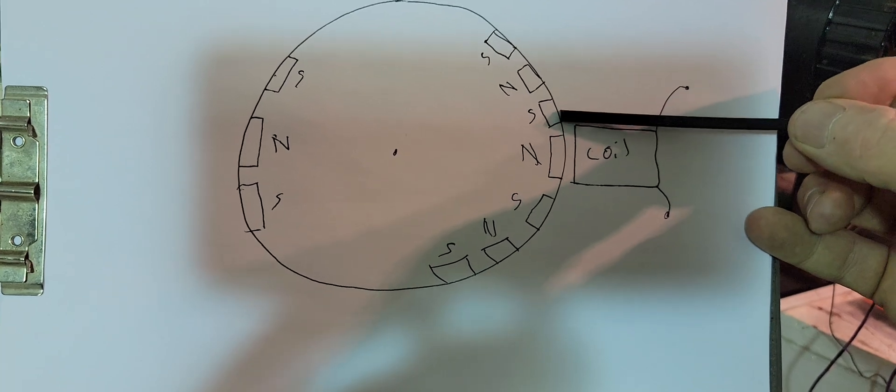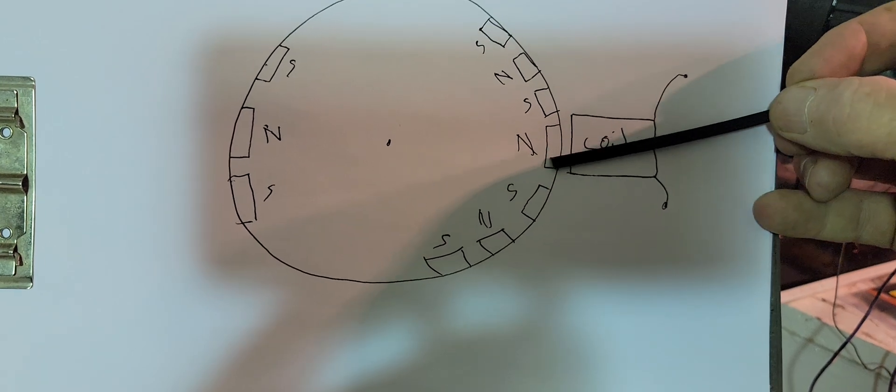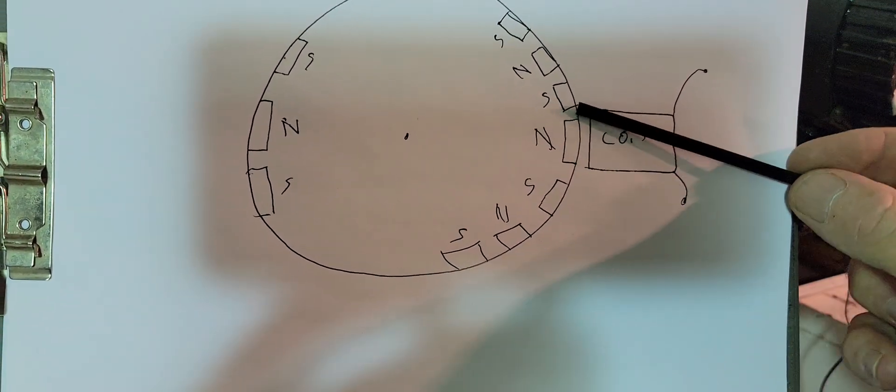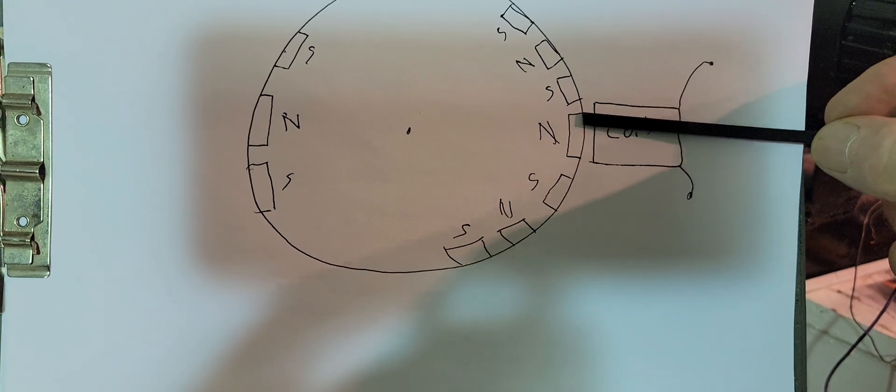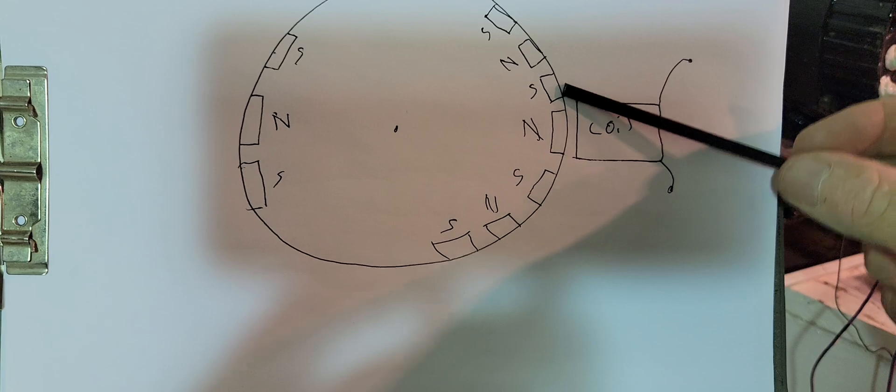And it pulls towards this one, so when it fires it's pushing this one and pulling on this one at the same time. That's why it's important to have that spacing on your rotor where the coil can affect both magnets.